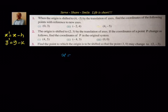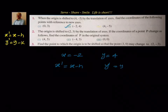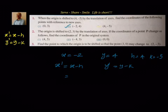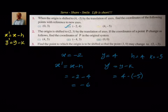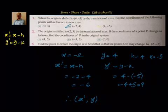For the second sub-part, x = -2 and y = 4, with h,k = (4, -5). Using x-dash = x minus h = -2 minus 4 = -6, and y-dash = y minus k = 4 minus (-5) = 4 + 5 = 9. Therefore, the coordinates of the point with respect to the new axis are (-6, 9).